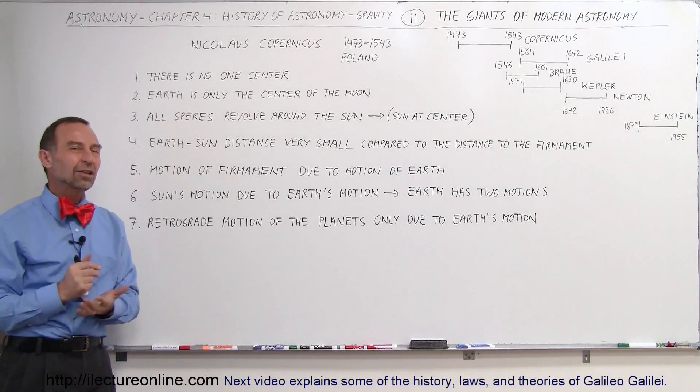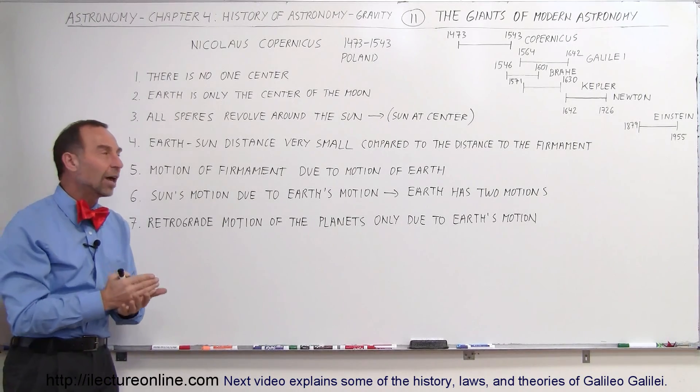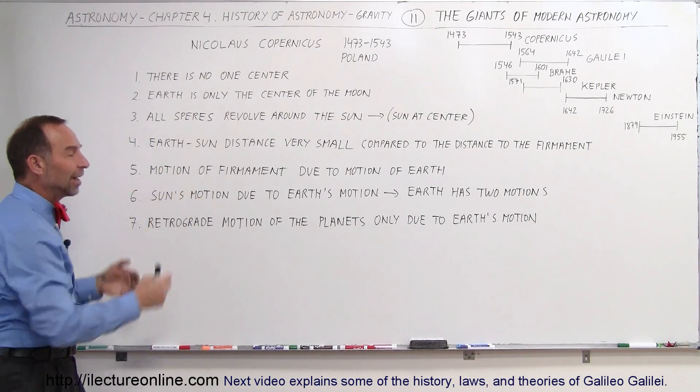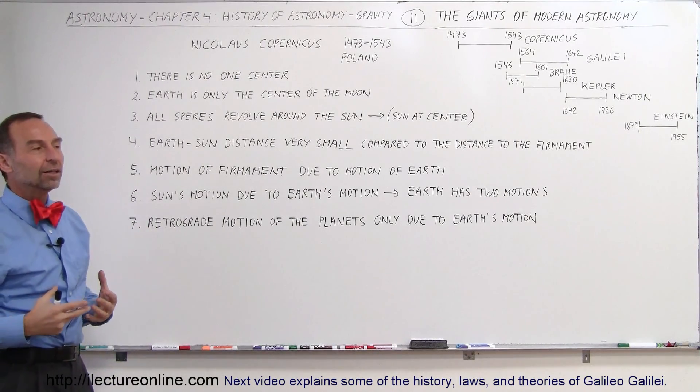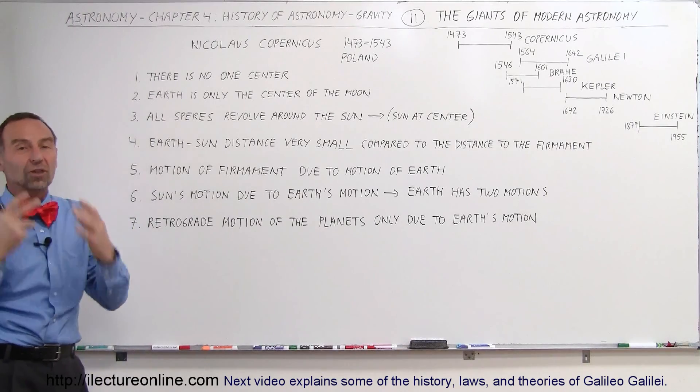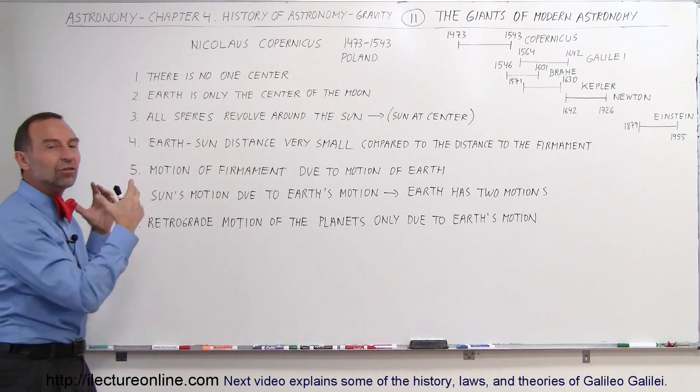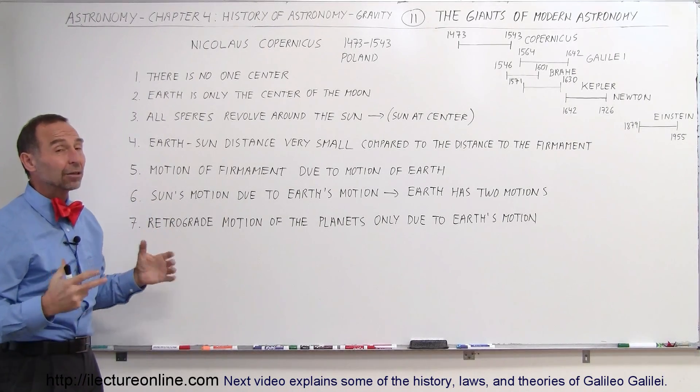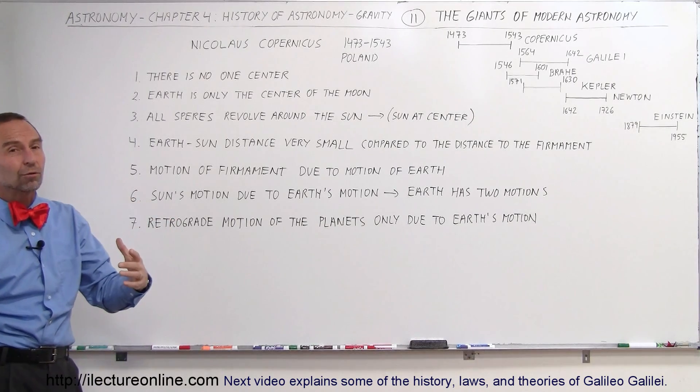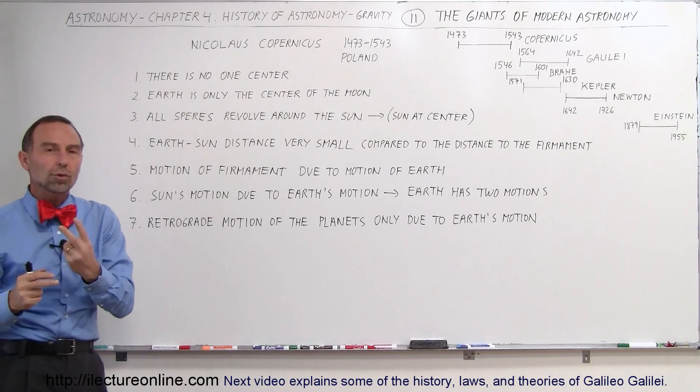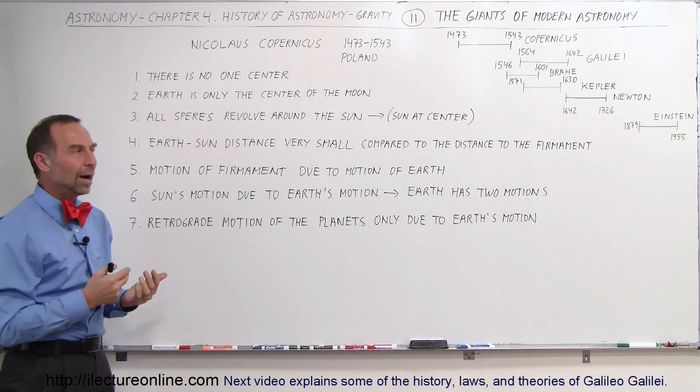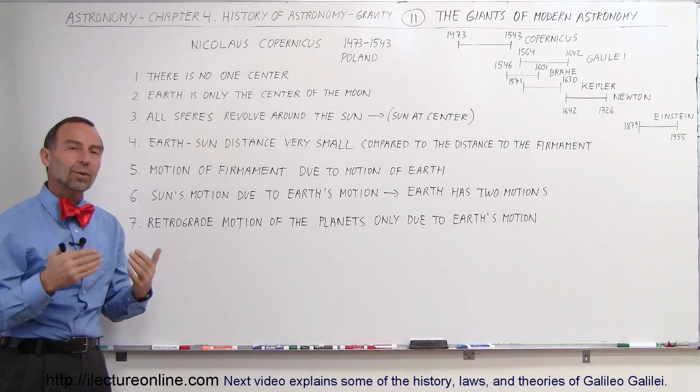Wow, what a solid seven statements that he made. He firmly said that because of this, I can confidently say that the Earth is not at the center of the universe, that the Earth is simply the center of the moon, and that the sun is at the center of the spheres, the planets, and that the firmament only appears to move because the Earth moves, and not just that the Earth moves, but the Earth has two motions, not just one. Wow. He set it straight. He set the record straight.